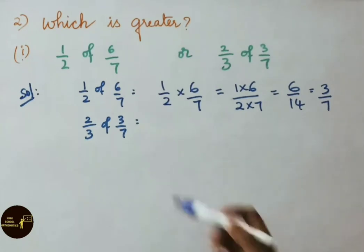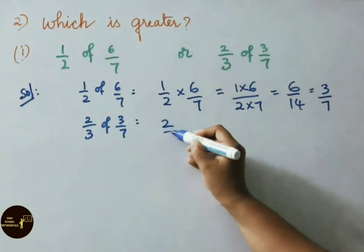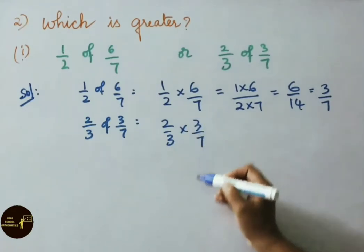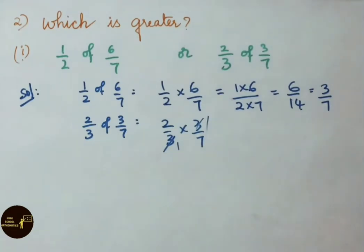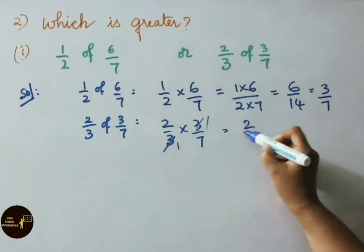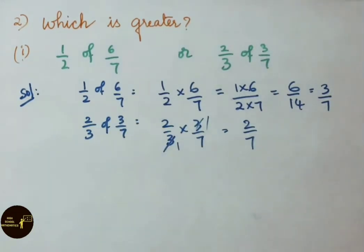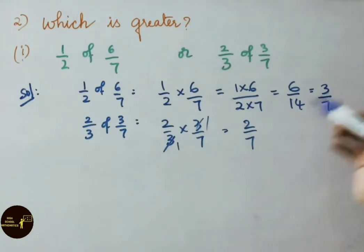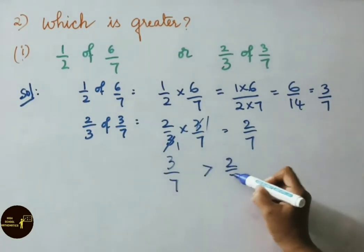Now for the second part: 2 by 3 of 3 by 7 equals 2 by 3 into 3 by 7. Cancel the 3 and 3 — 3 ones are 1 in both cases. The answer left is numerator 2 and denominator 7. So 2 by 3 of 3 by 7 equals 2 by 7. Of these two fractions, 3 by 7 is greater than 2 by 7.